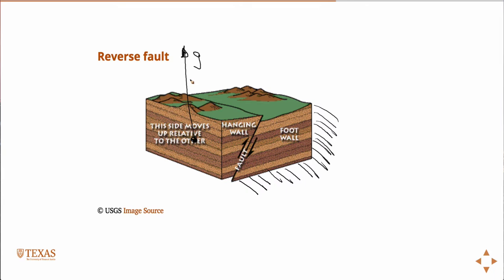Normal fault, foot wall, I'm sorry. I think I misspoke there. Let me be very clear. The hanging wall, I think I said foot wall, the hanging wall moves in the direction reverse to gravity. So normal fault, the hanging wall moves normal to gravity. Reverse fault, reverse gravity.